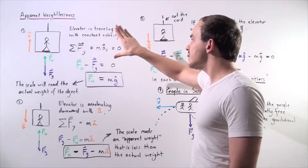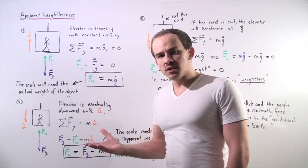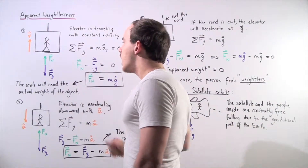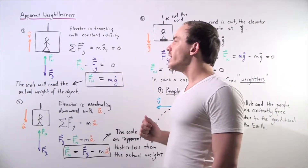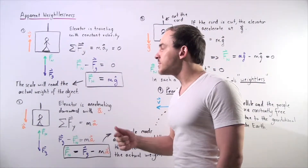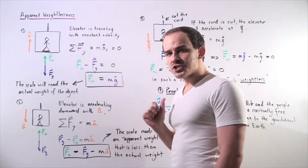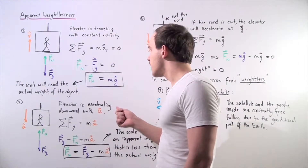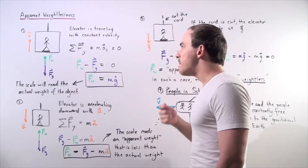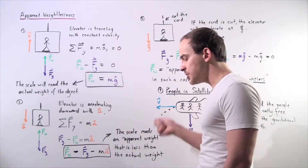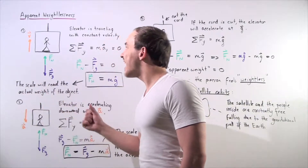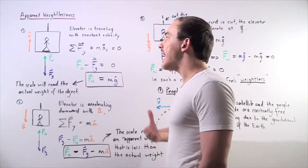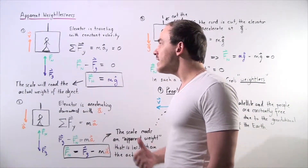Since the sum equals zero, the entire right side goes to zero. The forces acting on our person are the normal force created by the scale pointing upward and the gravitational force pointing downward. Choosing upward as positive, we get N minus mg equals zero, so the normal force equals mg. This means the scale reads the actual weight of the object, which is m times g.